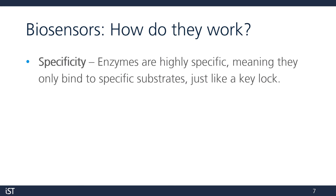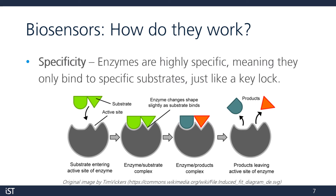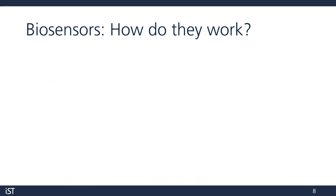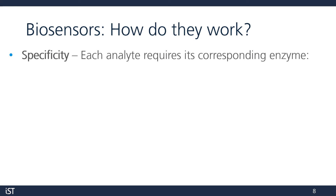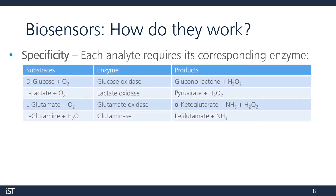One important thing to keep in mind when working with enzymatic biosensors is that the enzymes are highly specific, meaning they'll only bind with specific substrates. Let's take a look at this example: we have the substrate, which represents our analyte. It comes into contact with our enzyme and binds. Then, a chemical reaction takes place and the products of the reaction exit the active site of the enzyme. Let's take a look at the four main analytes that can be measured with IST's biosensors: glucose, lactate, glutamine, and glutamate.